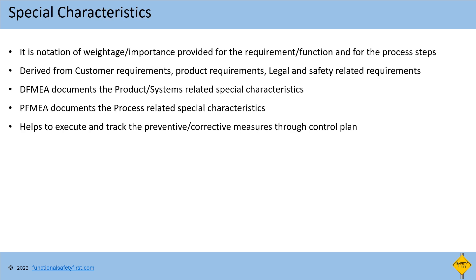Special characteristics is a notation of weightage or importance provided for the requirement or function and for the process steps. It is derived from customer requirements, product requirements, and legal and safety-related requirements. For example, the color and symbol of the turn indicator, low fuel, or seatbelt indicator are to be as per country-specific regulations. These will be marked as critical characteristics in the FMEA so that the correct symbol and color of the indicator are ensured during manufacturing. Design FMEA documents the product or system related special characteristics, while process FMEA documents the process-related special characteristics. This helps to execute and track the preventive and corrective measures through the control plan.